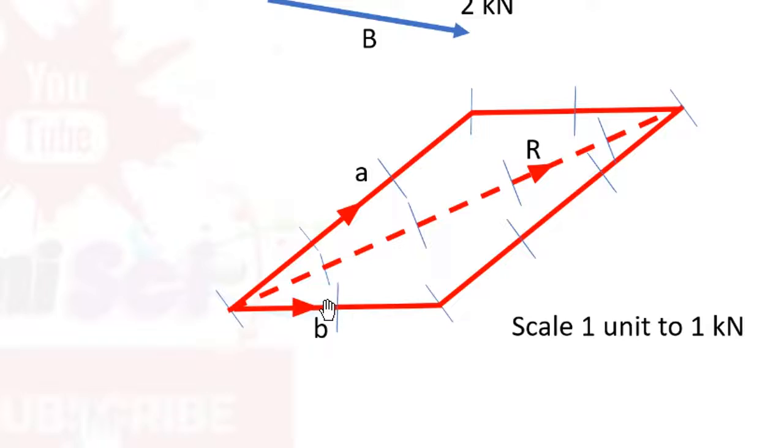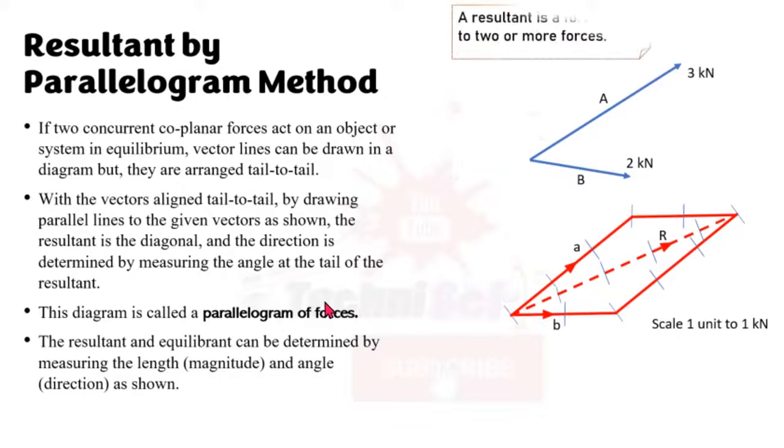Now reminder, what a resultant is: it tells you the sum of two or more forces. In this one, we are saying that the sum of A plus the sum of B gives you R. And if you recall, this looks pretty similar to the resultant we did with the triangle method. That's because it is.